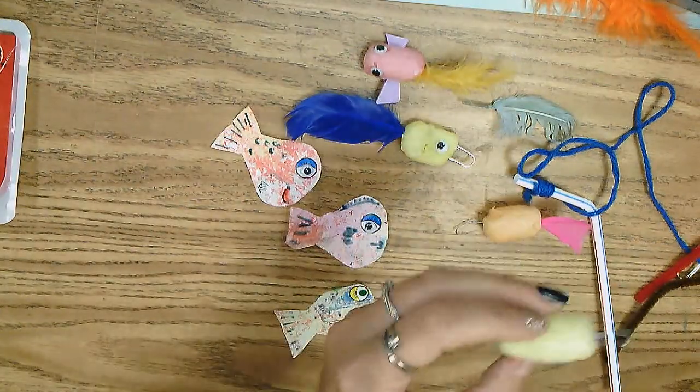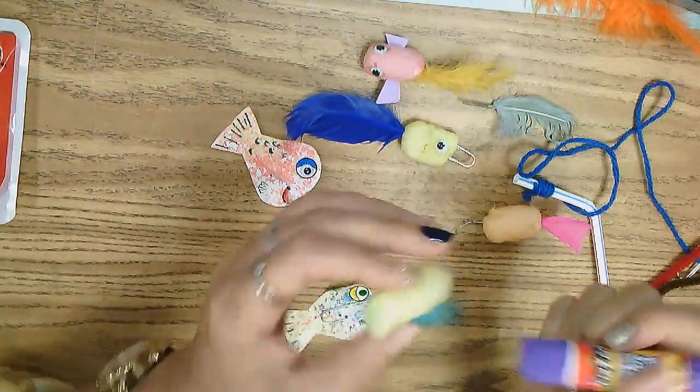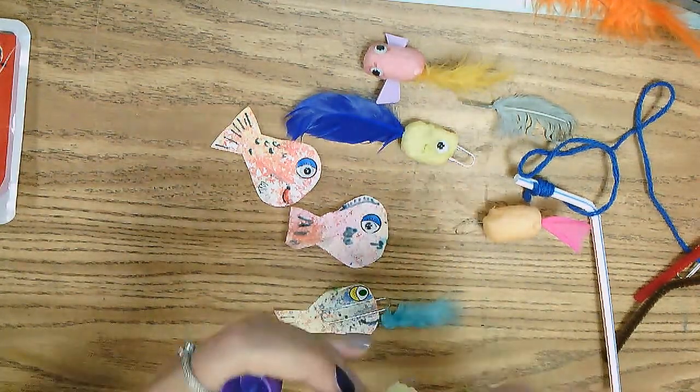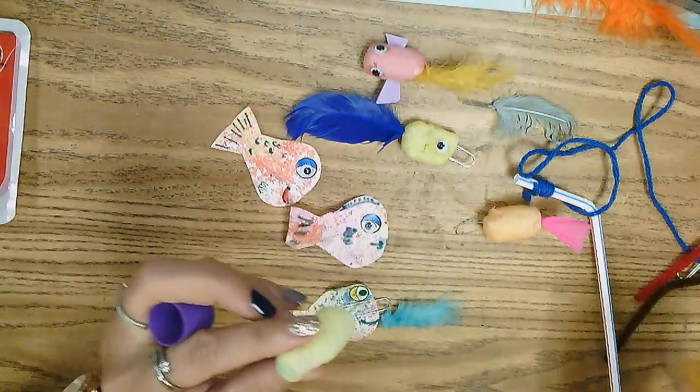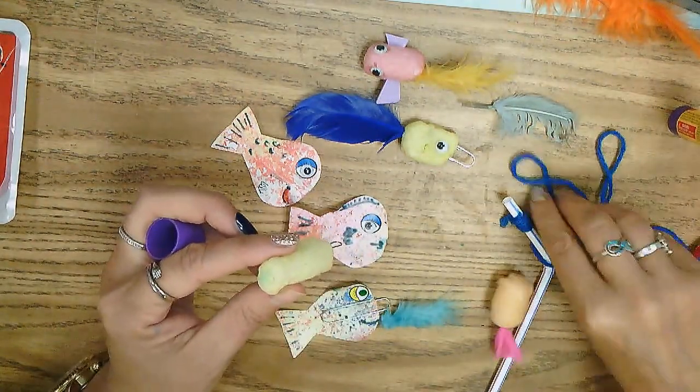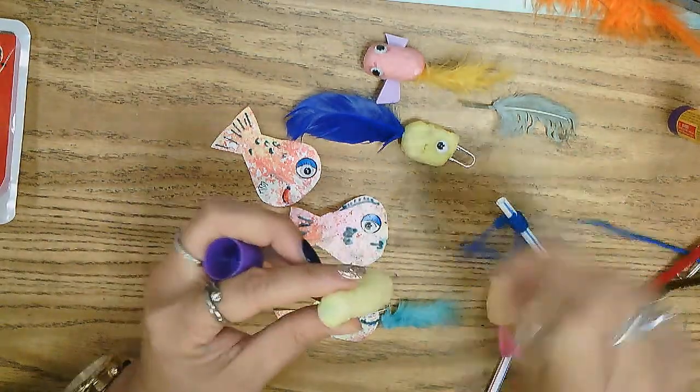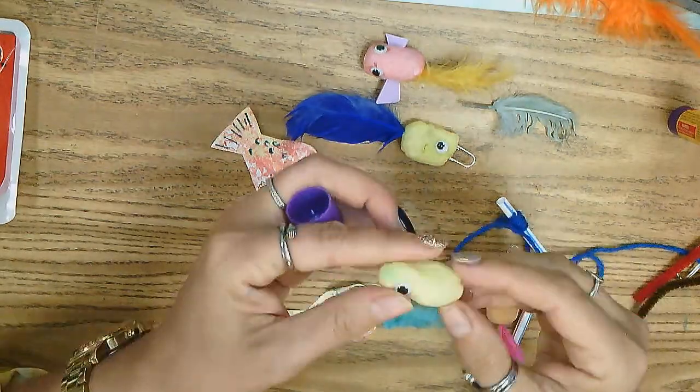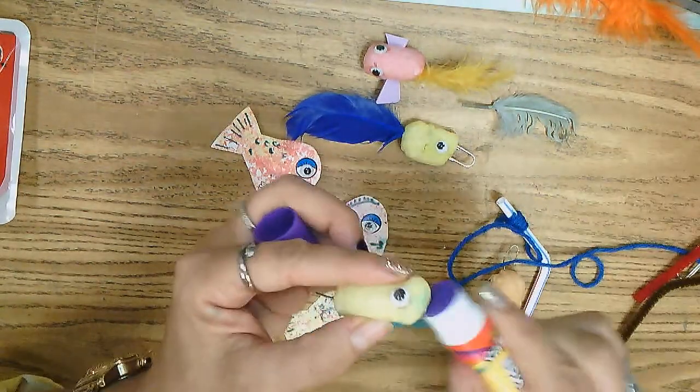On both sides of my fish I am going to apply some purple glue so I can see where the eye goes. And I'll simply glue my eye on right there and the other side.